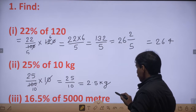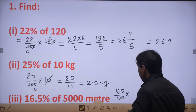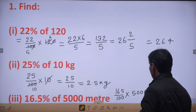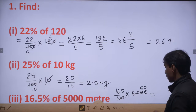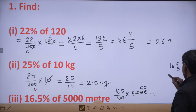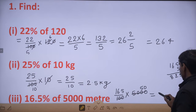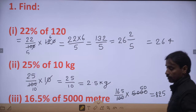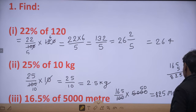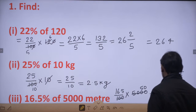Similarly एक और question given है: 16.5% of 5000 meters. तो 16.5/100 × 5000 meters. 5000 को 50 time में cancel कर सकते हैं। अब 165 × 5 को multiply करेंगे: 55 and 25 — that gives 825. 2 decimal places हैं, so 825 meters. Clear है?